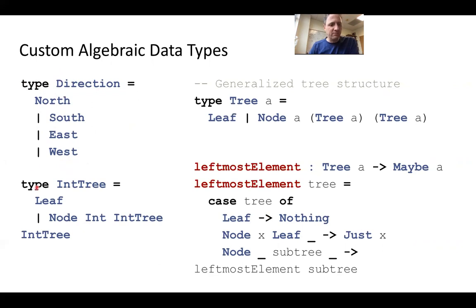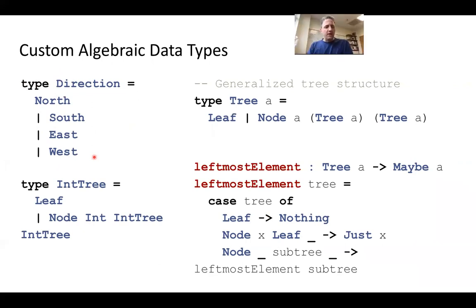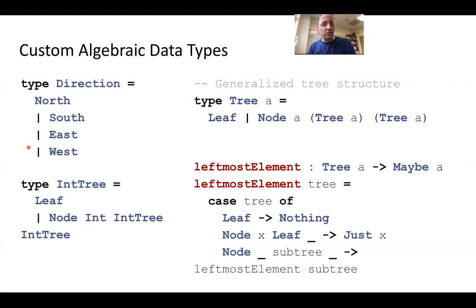Student question: Is this kind of like how a number can be a float, int, or double? Yes. By creating this kind of type, the compiler can check to make sure that things we're passing around that are directions are properly typed. You'll see some examples of this when you work on your tic-tac-toe client.